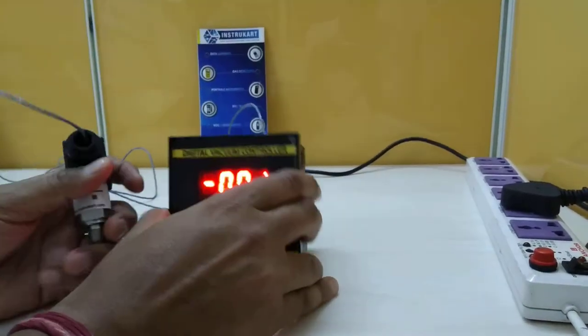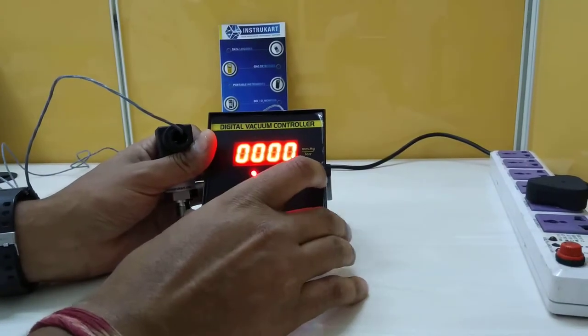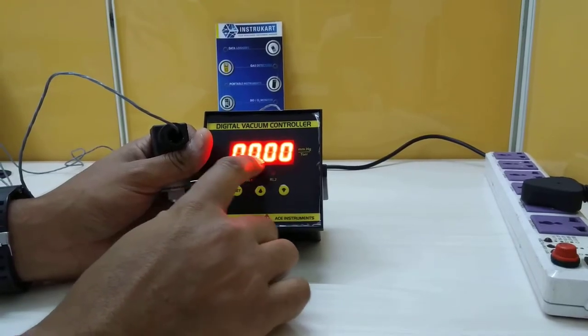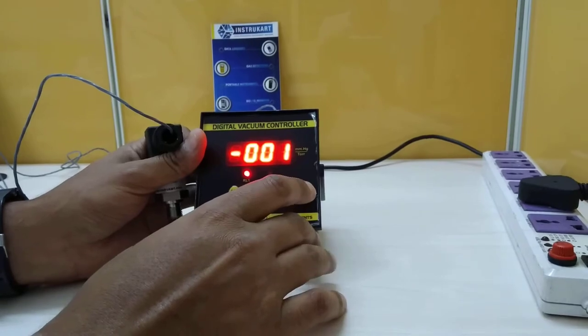As you can see, this is between 0 to minus 762. We can see it's been toggling between 0 to minus 001 because of the barometric vacuum also.